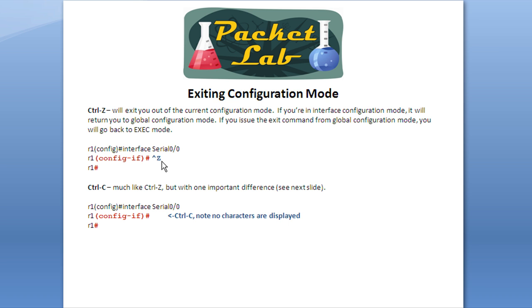Control C is very much like Control Z but with one important difference that we're going to see in the next slide. Same deal here — we're in interface configuration mode, I hit Control and C at the same time and I'm put back into privileged exec mode. You'll notice there are no characters displayed; we don't get the caret and the capital Z. There is a very important difference between these two commands. They're both keyboard shortcuts for the end command, but there is a very important difference in the way Cisco IOS treats them — which I have to admit I was not aware of before I did research for this lesson.